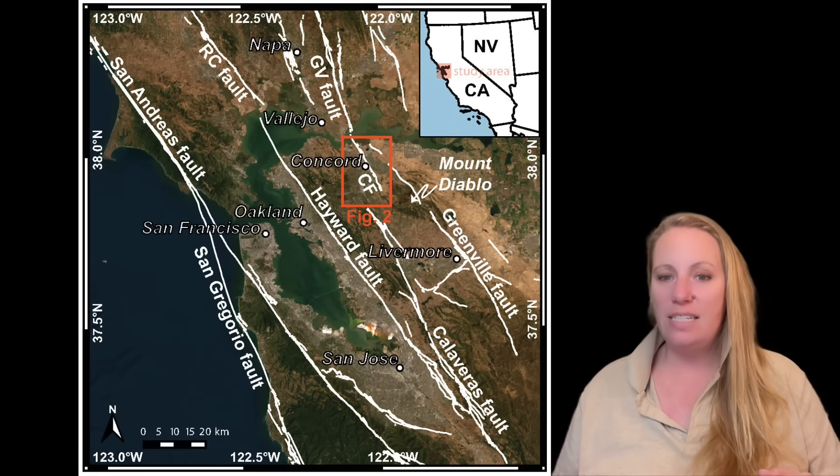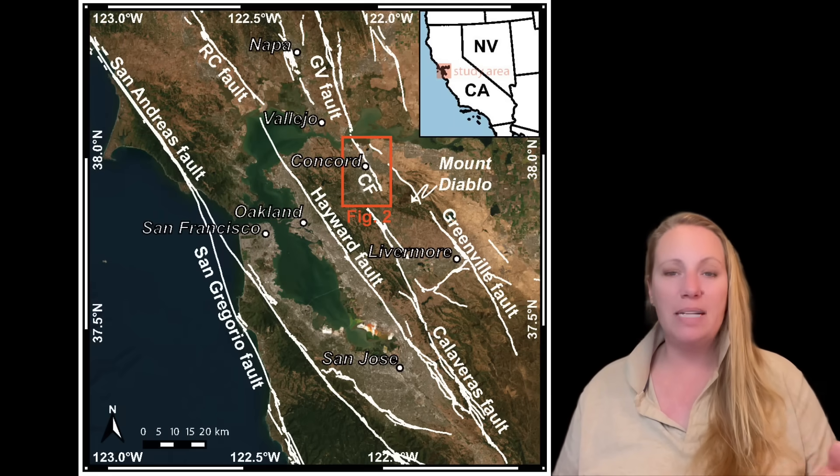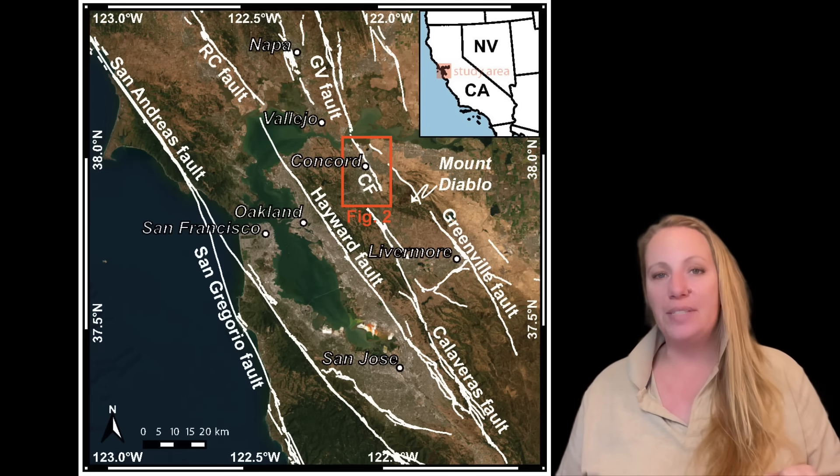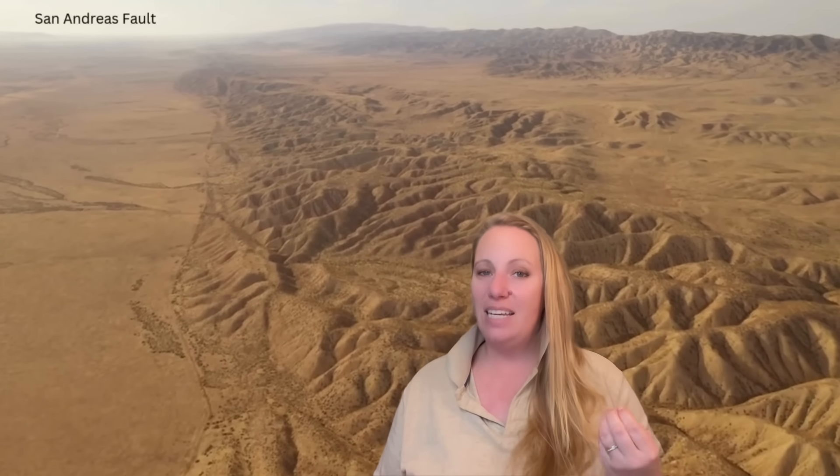Recent studies have confirmed that large fault systems can interact — one major fault can influence another. The Cascadia fault and the San Andreas fault interaction is absolutely underestimated. This is something to take seriously.